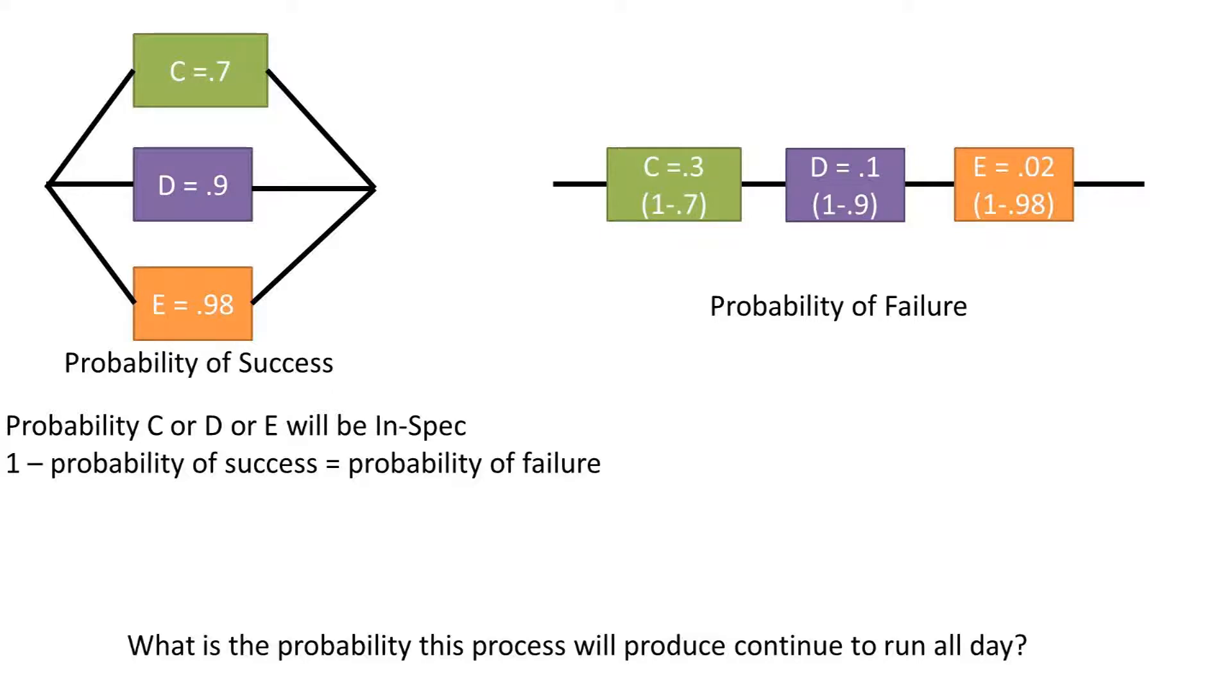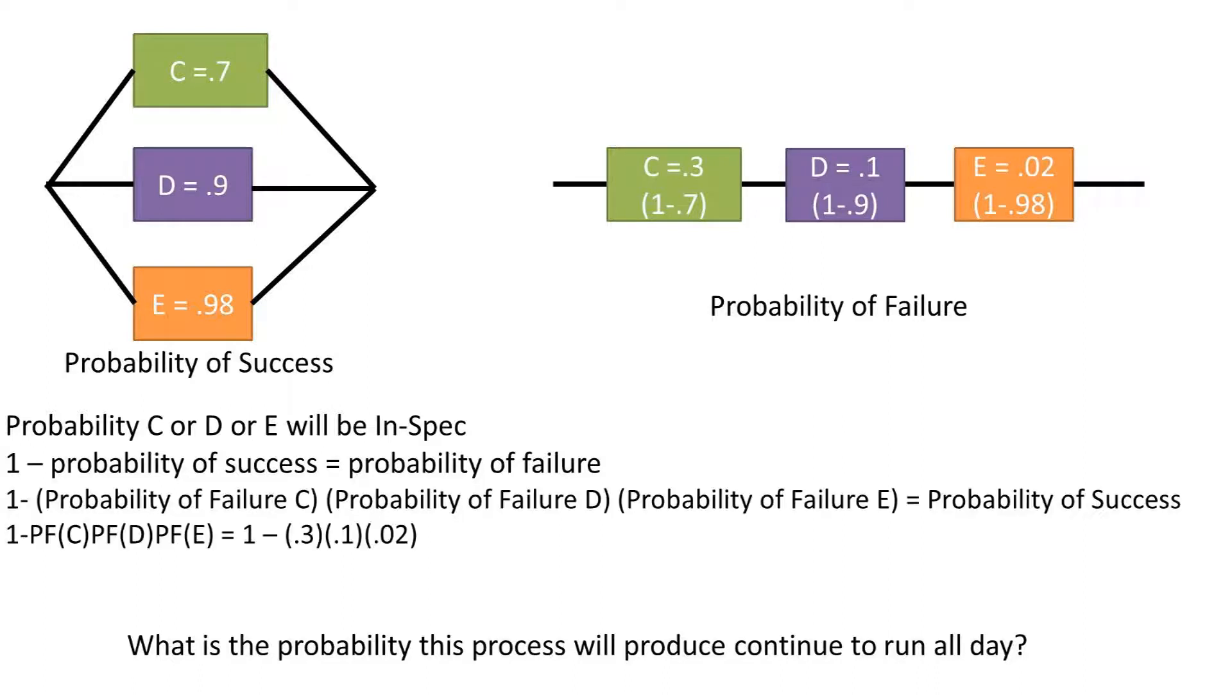To get the probability of success, we can take 1 minus the probability of failure, which is all the probabilities of failures multiplied together. And we get a probability of 0.9994, or 99.94%, chance the process will continue to run for the day.